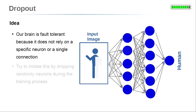The idea behind Dropout is related to our brain. Our brain is very robust and fault tolerant. On the one hand, it can process fuzzy information as input. For instance, a small distortion of the visual information or a small part of this information missing is usually not important to grasp the content. So it does not rely on a specific information detail in the input.